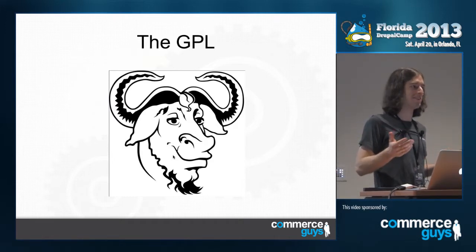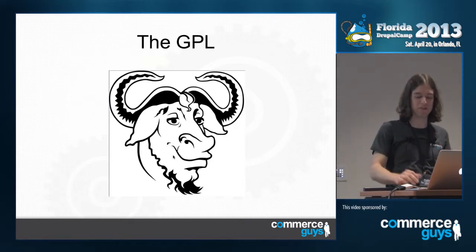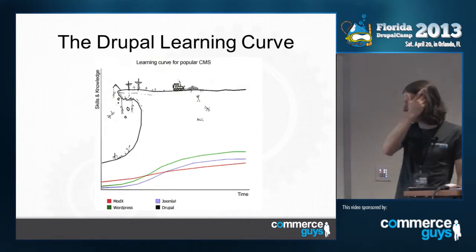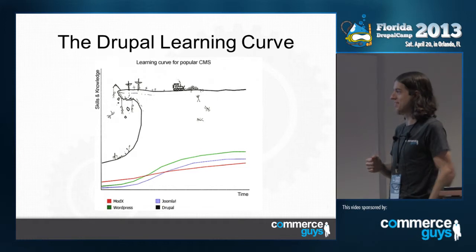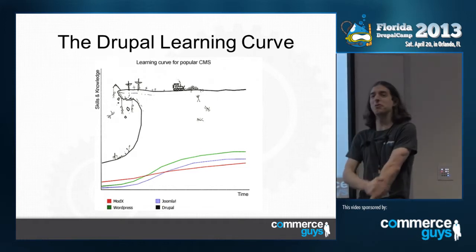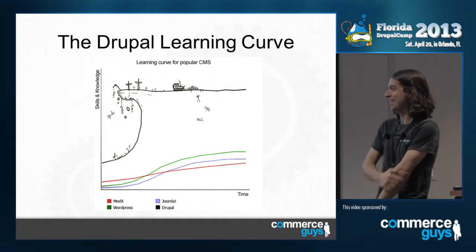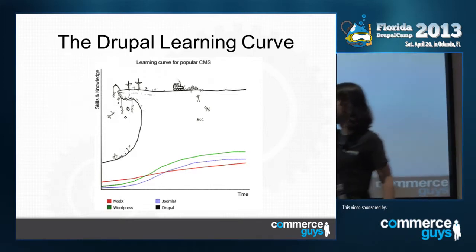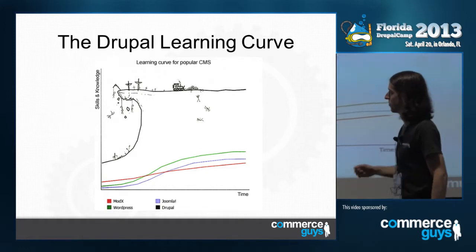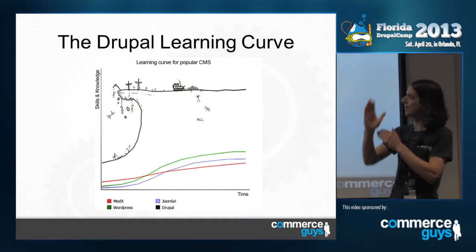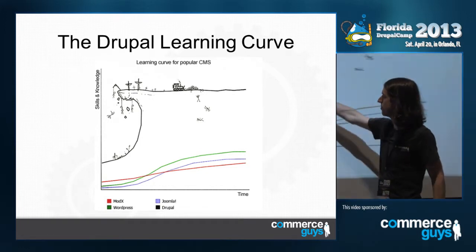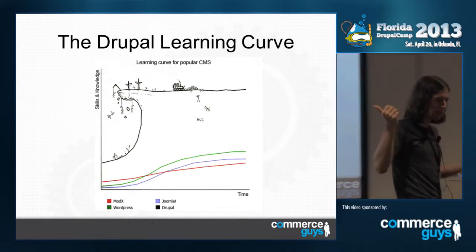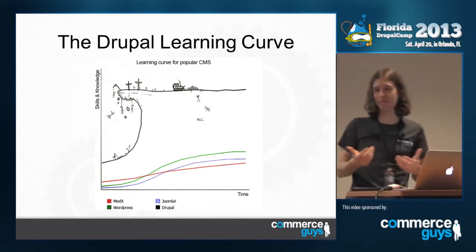Obviously I'm being a little reductionistic when I say the GPL is responsible. This is also a little reductionistic — and this is a lovely graph of the Drupal learning curve. I say it's reductionistic because you're just doing different things on these lines than you are before you have to pass — I guess the people that have died along the way to learning Drupal.